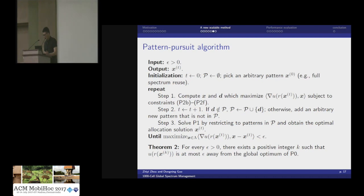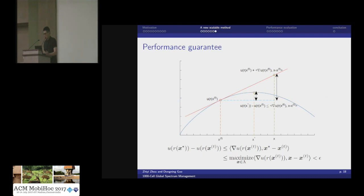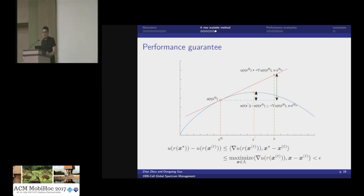The convergence proof can be illustrated with a two-dimensional graph. Suppose the blue curve is the utility function and x-star is the optimal value. At iteration t, we maximize the linear approximation (the red line) and get solution x. Using the distance vector, we calculate the distance, which is always an upper bound of the optimality gap. Therefore, after each iteration we always know how far we are from the optimal. When the algorithm terminates, we know the optimality gap is always smaller than the precision threshold epsilon.